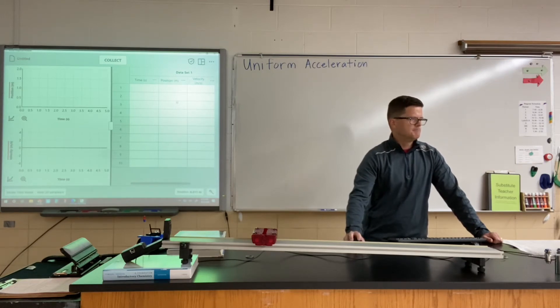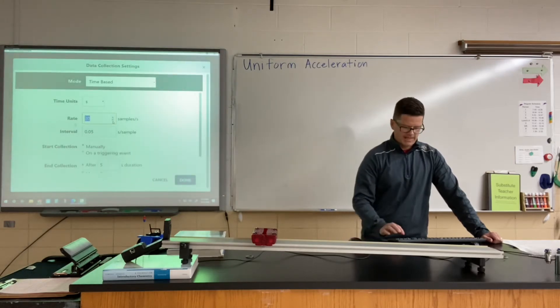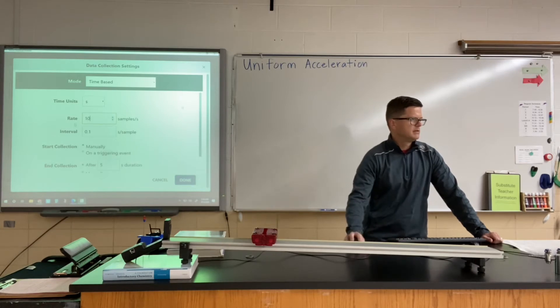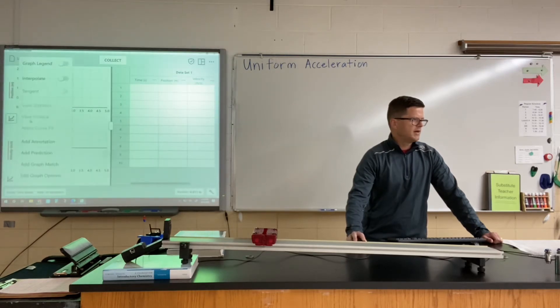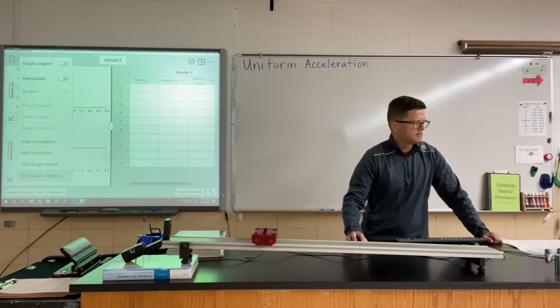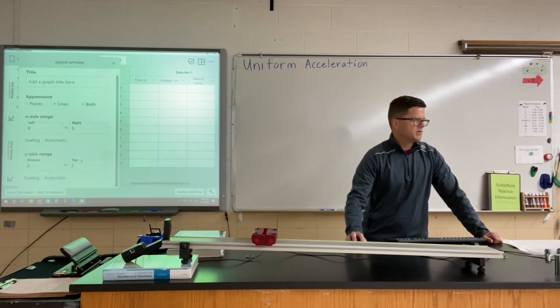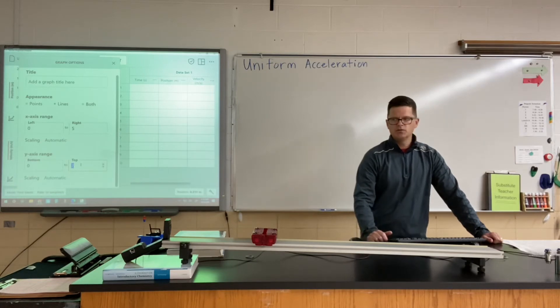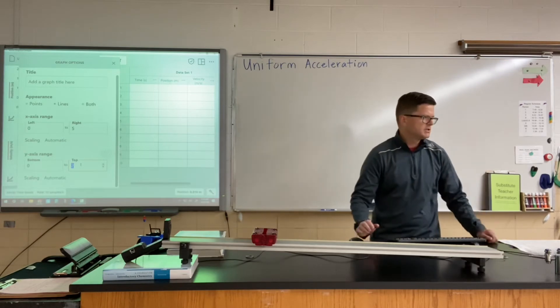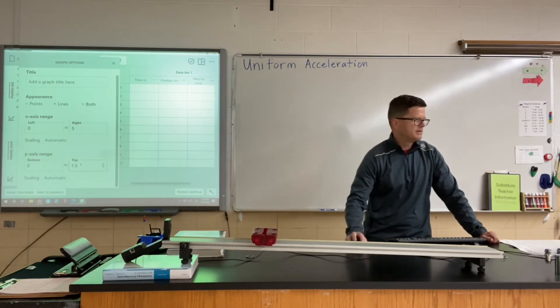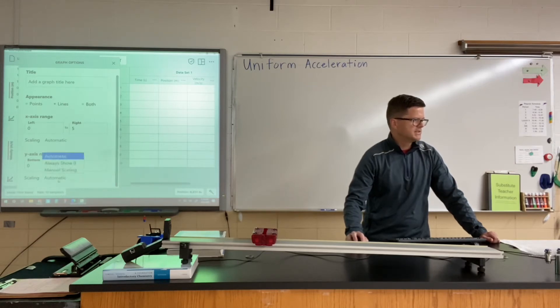In this particular run of data I'm going to change up the sampling rate to 10 samples per second just so that we don't have an overwhelming amount of data. I'm also going to go into my graph options and set the maximum position. Right now it runs to two meters away. I'm only going to be 120 centimeters from the detector, so maybe I'll just set that at 1.5. I'll set scaling to manual.